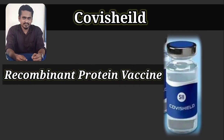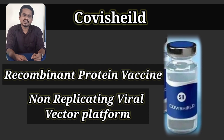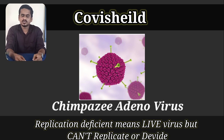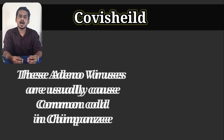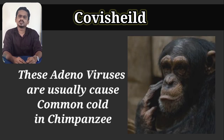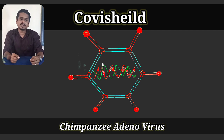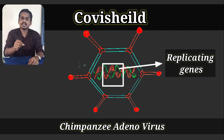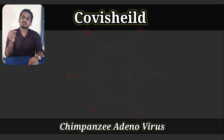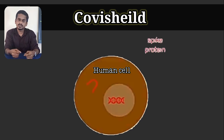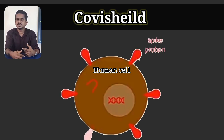Covishield is a recombinant protein vaccine which uses a non-replicating viral vector platform. Here, a replication-deficient chimpanzee adenovirus is used for the production of the vaccine. These are harmless weakened adenoviruses which usually cause common cold in chimpanzees. For vaccine preparation, genetically modified adenoviruses are used wherein the replicating genes are deleted and COVID-19 spike protein genes are inserted. When injected, these adenoviruses enter our cells but won't cause disease. Instead, they produce the COVID-19 spike protein, which in turn induces an immune response to produce antibodies against the COVID virus.